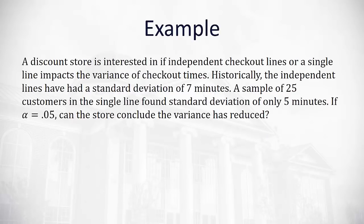Let's look at an example. A discount store is interested in whether independent checkout lines or single lines impact the variance of checkout times. Historically, the independent lines have had a standard deviation of seven minutes — that is the population sigma. A sample of 25 customers (our sample size n) in the single line found a standard deviation of only five minutes — that's the sample standard deviation S.